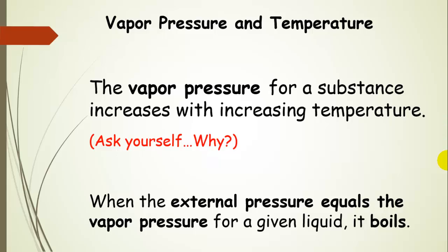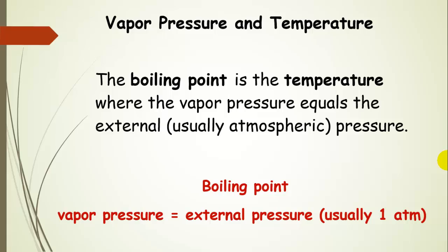If we keep increasing the temperature up to the boiling point, there's a point where the vapor pressure equals the external pressure pushing down, which is atmospheric pressure — one atmosphere. We don't usually notice it, but when that external pressure of one atmosphere equals the vapor pressure, then it's going to boil. The boiling point is defined as the temperature where the vapor pressure equals the external pressure, usually atmospheric pressure — one atmosphere.